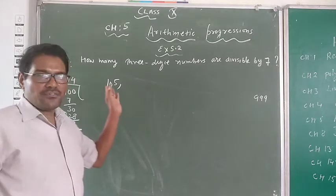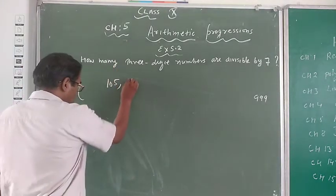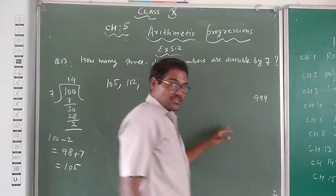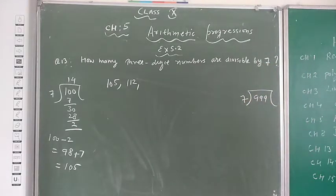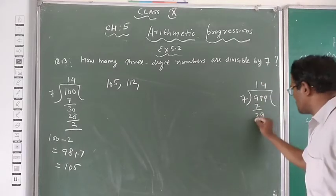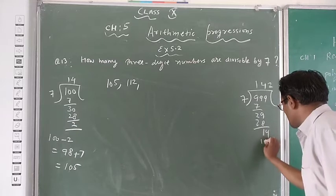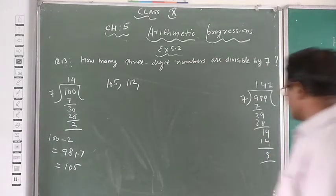So first of all, we need to find the smallest three-digit number divisible by 7. After 105, which is the next number? Plus 7. We need to find the pattern.